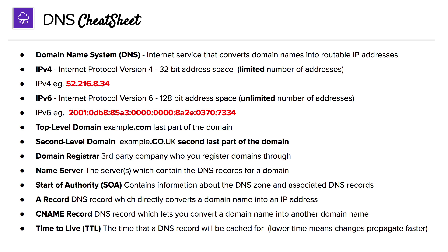And then we have an example of one there. And then we have IPv6, which is a 128-bit address space and has an unlimited number of addresses. And we also have an example there as well.